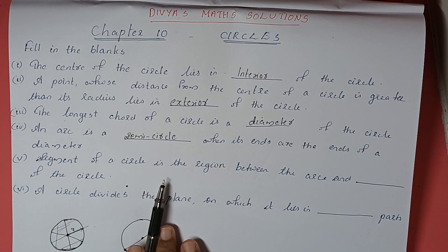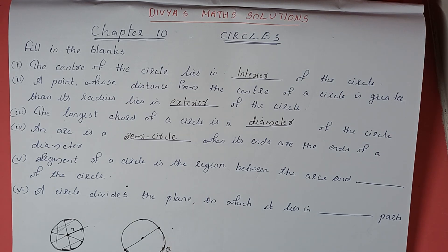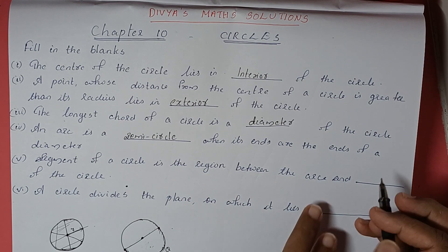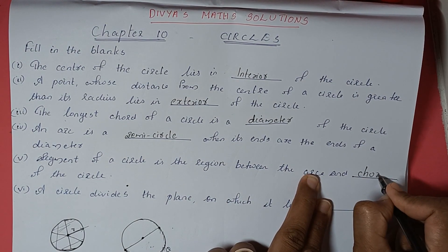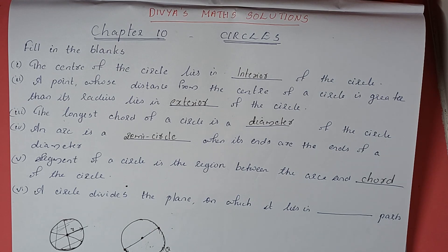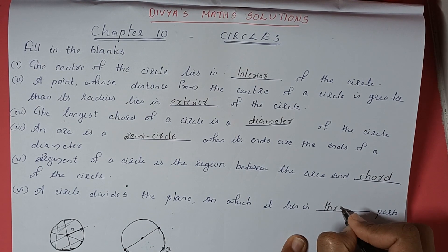Next: the segment of a circle is the region between arc and dash of the circle. The segment is the inside portion — the region between the arc and the chord. So the segment of the circle is the region between the arc and the chord. Also, a circle divides the plane on which it lies into three parts.